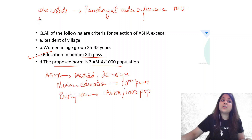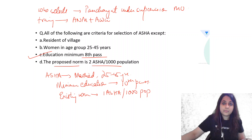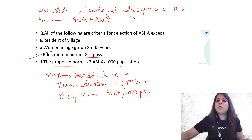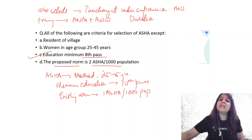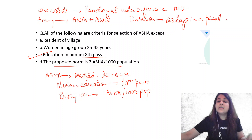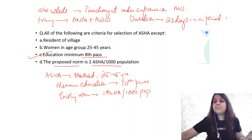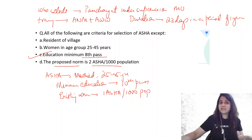Who is responsible for training the ASHA worker? Training is provided by ANM and Anganwadi workers. What is the duration of training of an ASHA worker? It is 23 days in a period of one year — not necessarily continuous, but within any period of one year, she can complete her training.